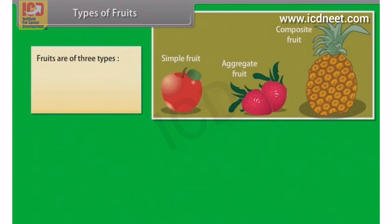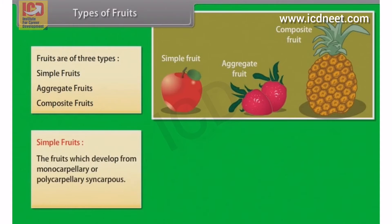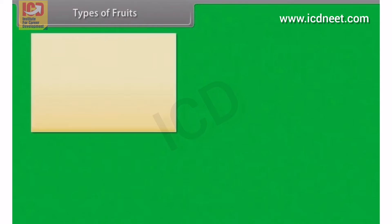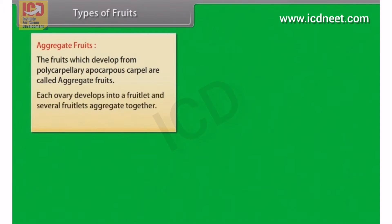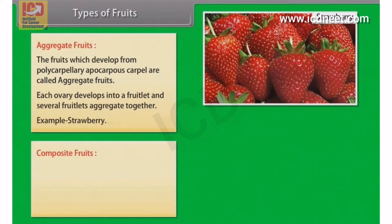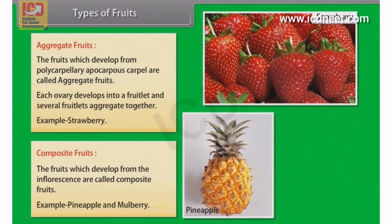Fruits are of three types: simple fruits, aggregate fruits, and composite fruits. Simple fruits develop from monocarpellary or polycarpellary syncarpous ovaries. Aggregate fruits develop from polycarpellary apocarpous carpels; each ovary develops into a fruitlet and several fruitlets aggregate together — example, strawberry. Composite fruits develop from the inflorescence — example, pineapple and mulberry.